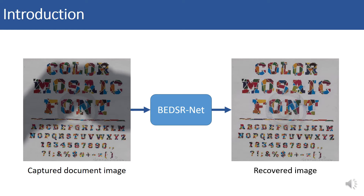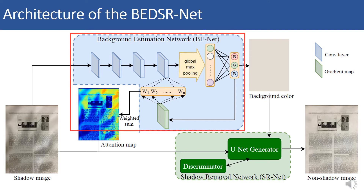For exploring specific properties of documents, we propose BE-NET for background color estimation. BE-NET also learns knowledge about the spatial distribution of background and non-background pixels.